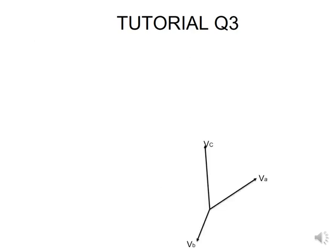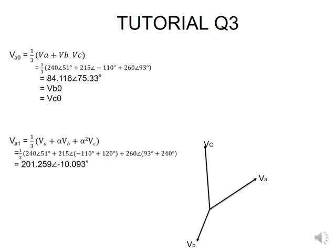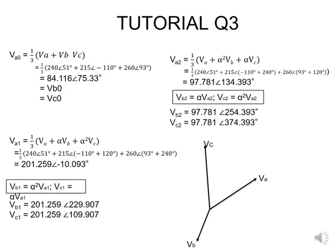So in this question, I'm given my VA, VB, VC. And for all three phases, I must find my zero, positive, and negative phase sequence. So I start with the A phase by putting VA0. I know that it's going to be a third of VA plus VB plus VC, which will also be the same as VB0 and VC0. Then I go into my VA1, which is a third into VA plus alpha VB plus alpha squared VC. And from there, I can work out my VB1 and my VC1. Then I go into my VA2, which is a third into VA plus alpha squared VB plus alpha VC, which will also give me my VB2 and VBC formula. And I go and put those values.